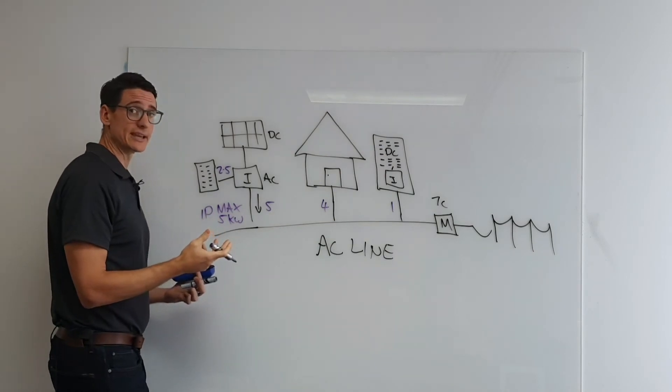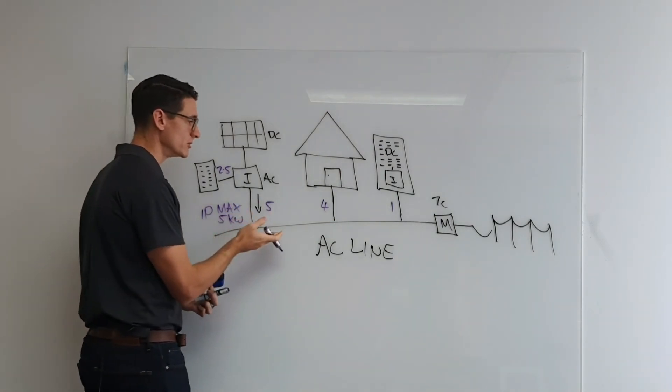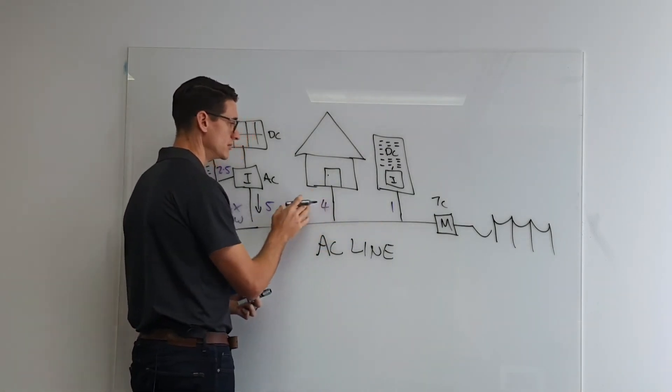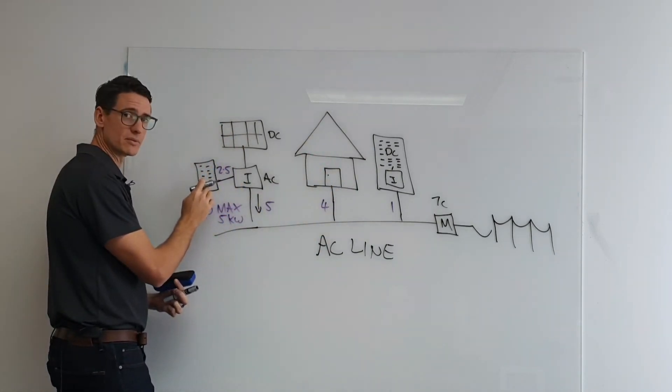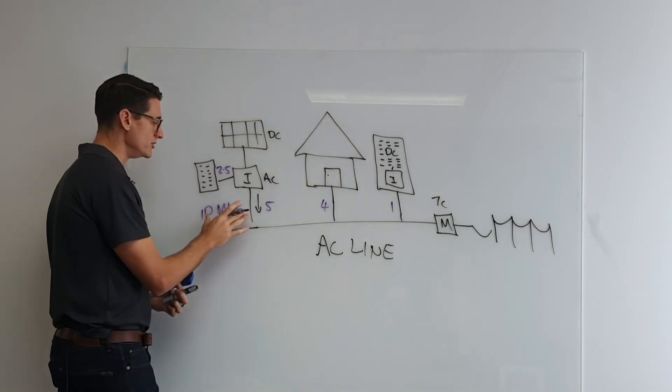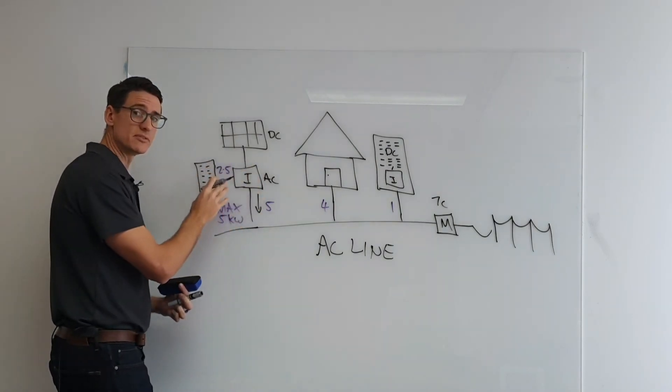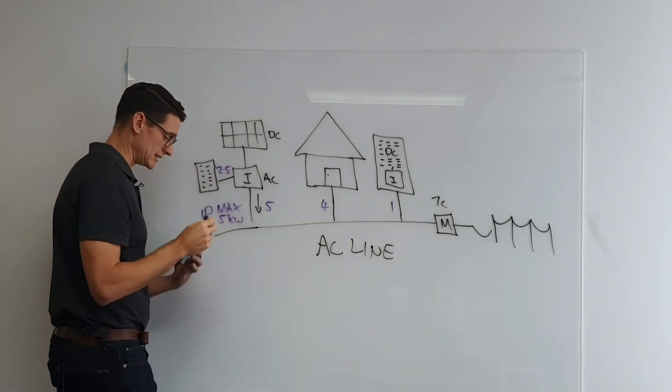So you can essentially have your cake and eat it too, where you have five kilowatts coming into the home, and the home can use that power, but you can also have power going into the battery cell. Now, Western Power views these types of systems differently.